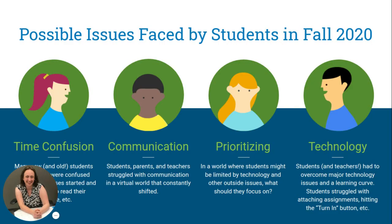At the end of fall 2020, as we sat back and thought about what had gone right and wrong, everything that our group discussed tended to fall into four categories: time confusion, communication, prioritizing, and technology.